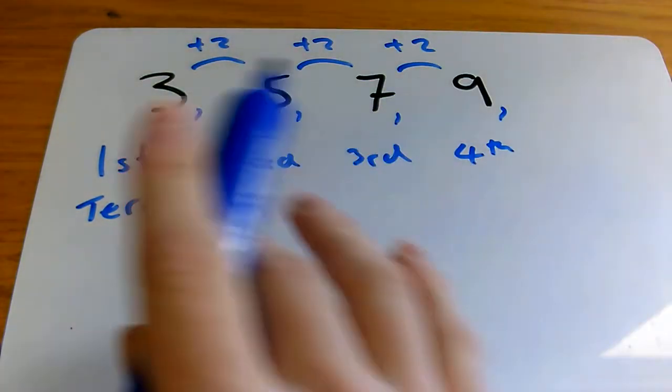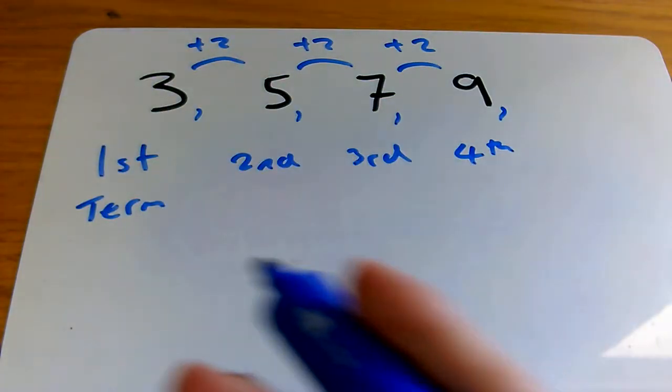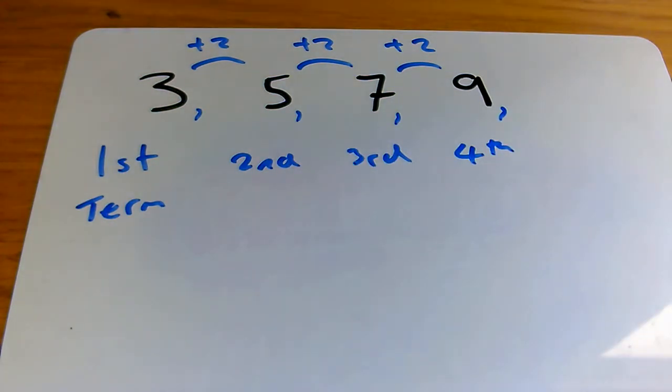You might call them the numbers, but a sequence doesn't have to have numbers. A sequence can have letters if it's algebra, or it could have symbols as well.